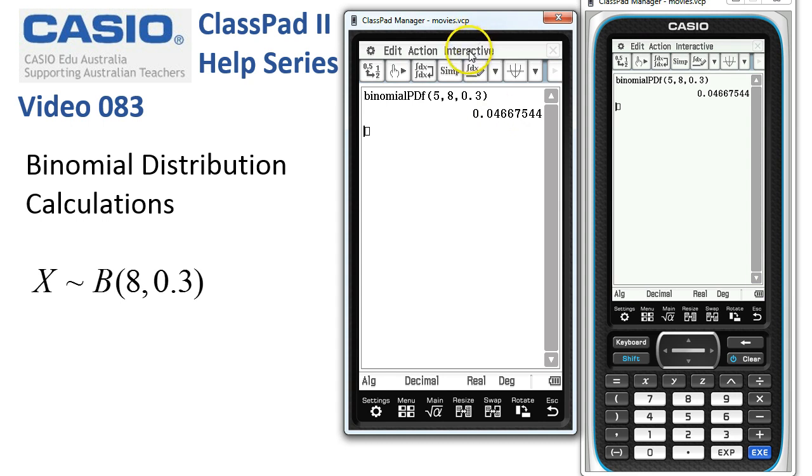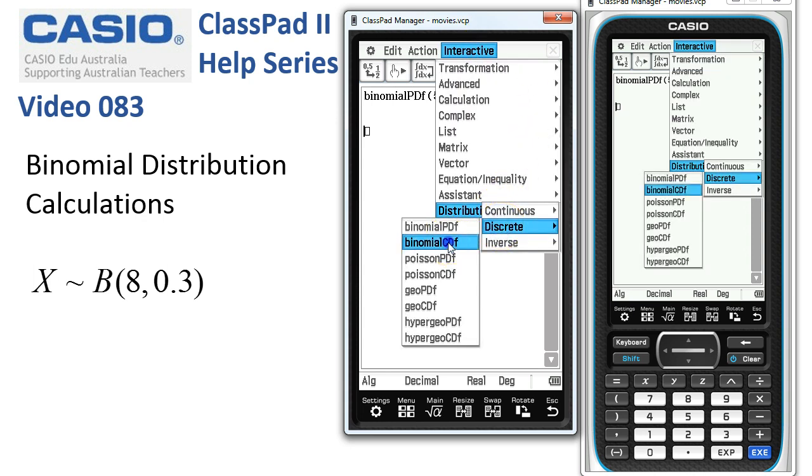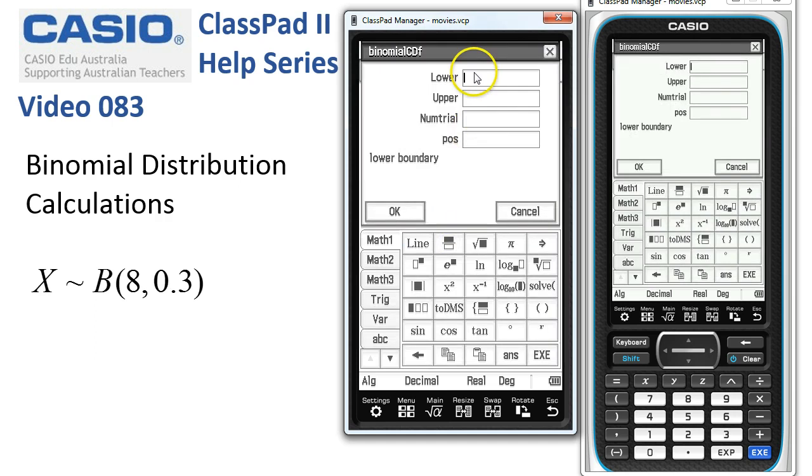The other possibility we've got is if it's a cumulative distribution. Say we wanted the probability of one, two or three successes. So then we'd use the interactive distribution discrete, but this time the cumulative. So we want between one and three. So we enter the lower as one, the upper as three.